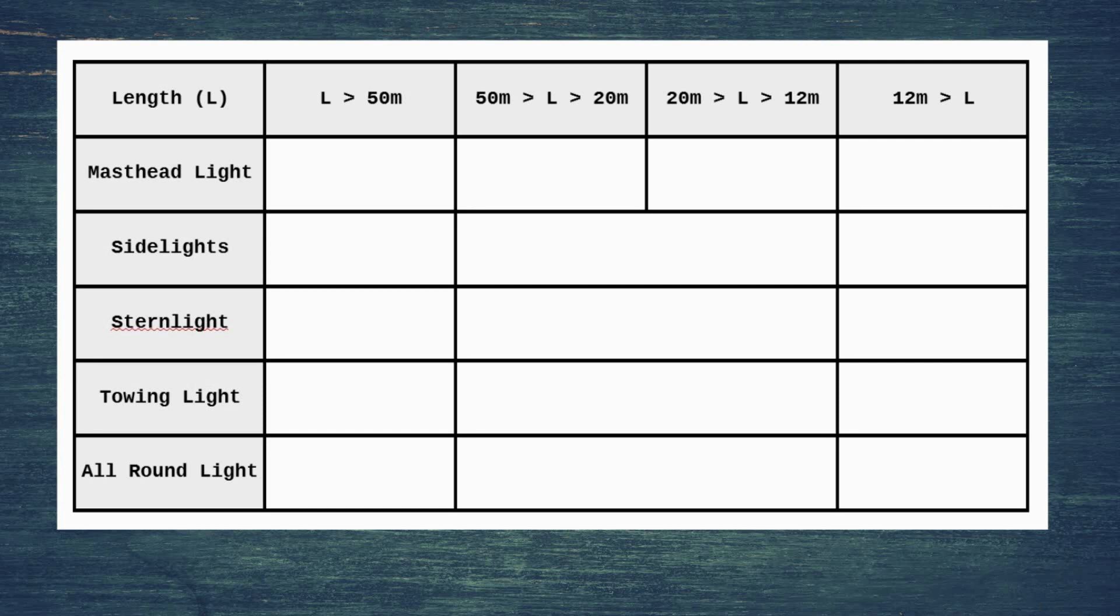We can start off with the biggest one. Vessels greater than 50 meters, their masthead light needs to be visible at 6 miles. This is going to be the largest range on the table, and this makes sense because you want to see large vessels if they're coming towards you from the greatest range. Then the sidelights, stern lights, towing lights, and all-round lights are all going to be half of that length. So vessels greater than 50 meters, we're looking at 3 miles range for all four of those different lights.